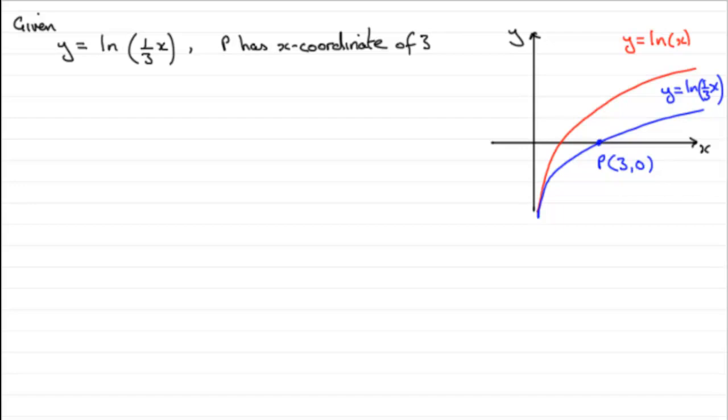And what we're asked to do is find the equation of the normal then at this point P. It's going to be a line then coming through P, looking something like this. And any line has the equation of the form y minus y₁ equals m bracket x minus x₁, where x₁, y₁ is a point on that line. And that clearly is going to be this point P now at 3, 0. x₁ will be 3, y₁ will be 0.